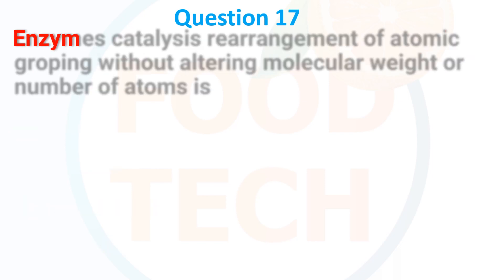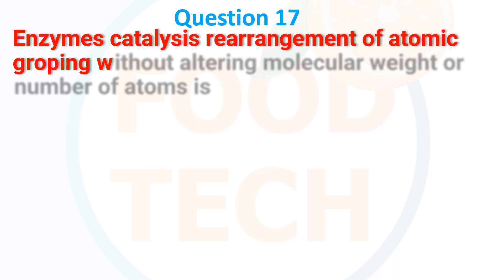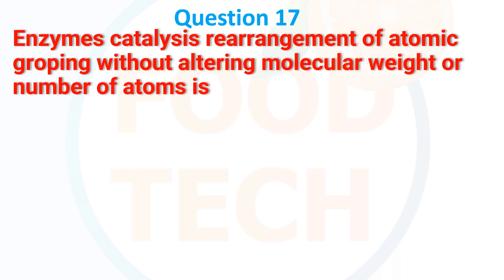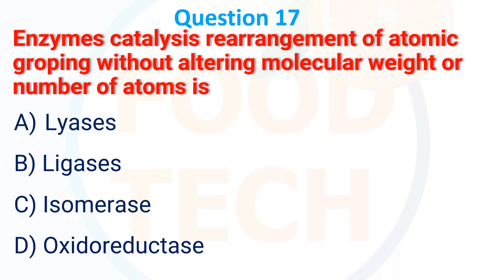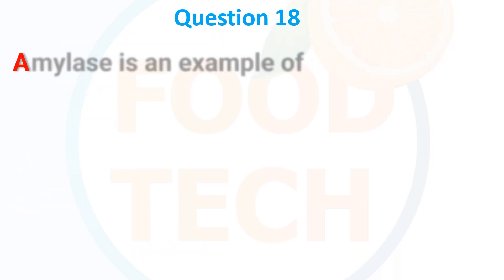Enzyme which catalyzes rearrangement of atomic groupings without altering the molecular weight or number of atoms: A. lyases, B. ligases, C. isomerases, D. oxidoreductases. The answer is C, isomerases.